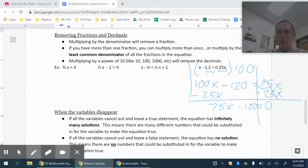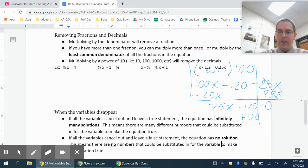I'm going to have 75x minus 120 equals 0. It's time to get my picture out of the way so we can keep solving this problem.